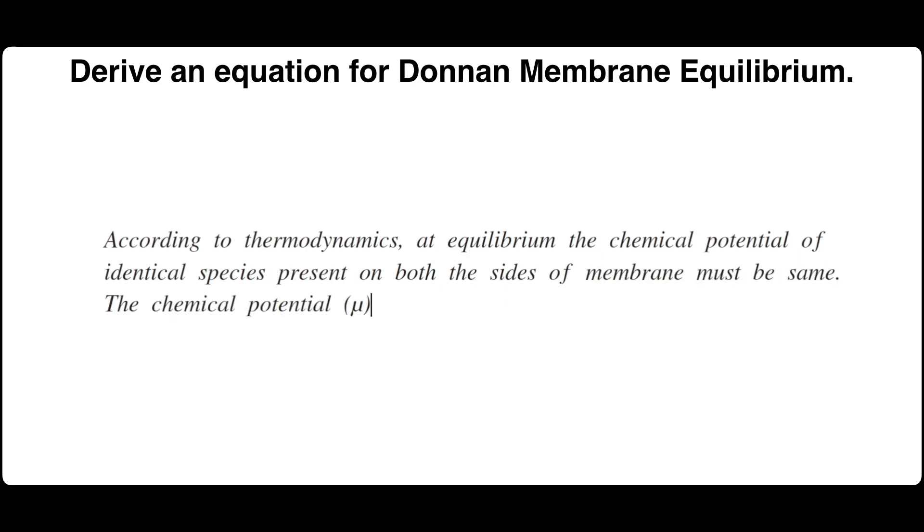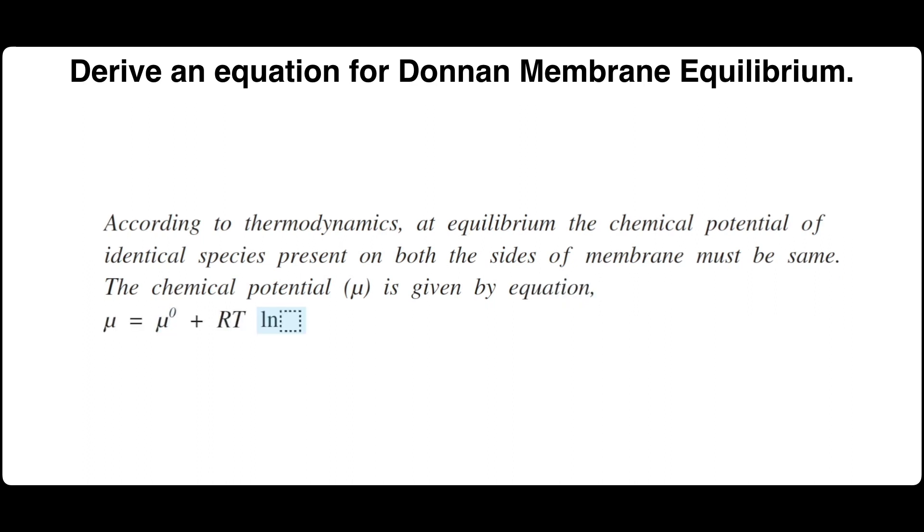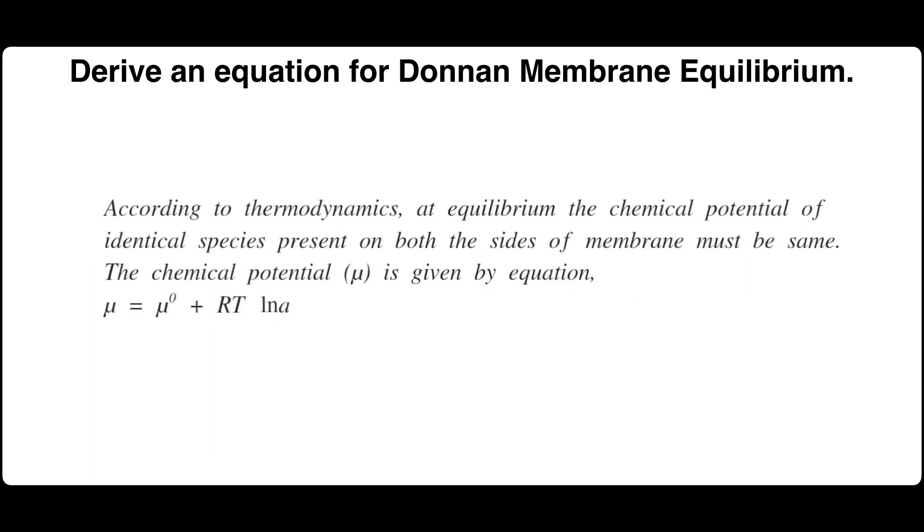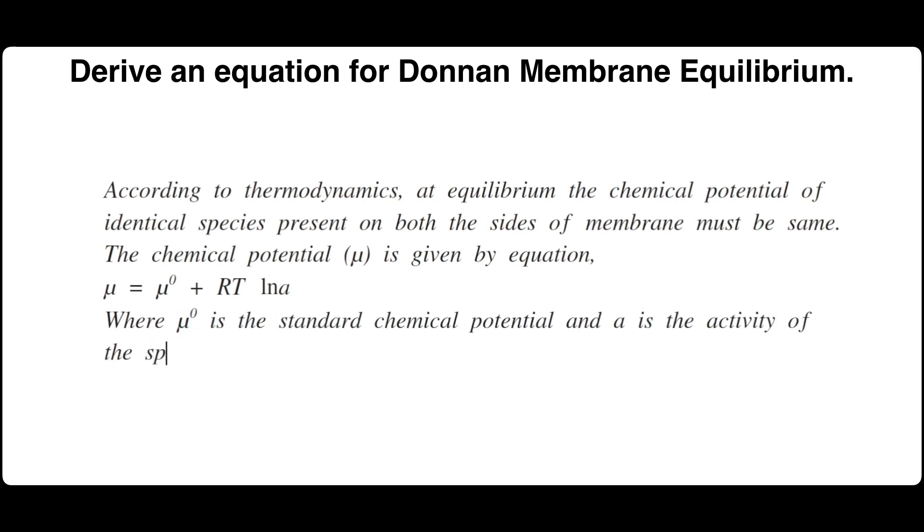The chemical potential μ is given by equation μ equals μ° plus RT ln A, where μ° is the standard chemical potential and A is the activity of the species.